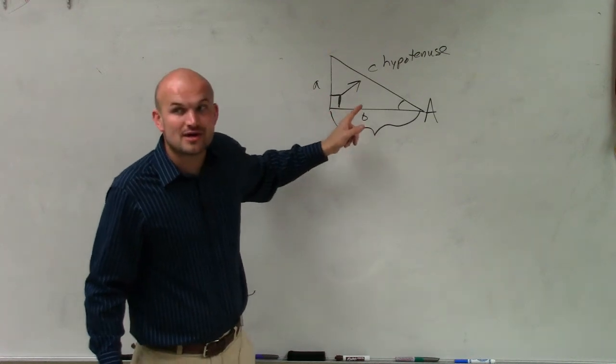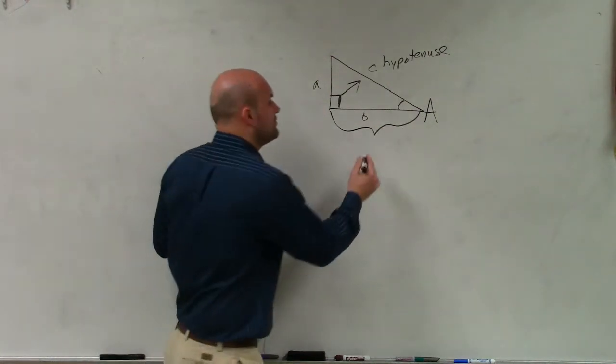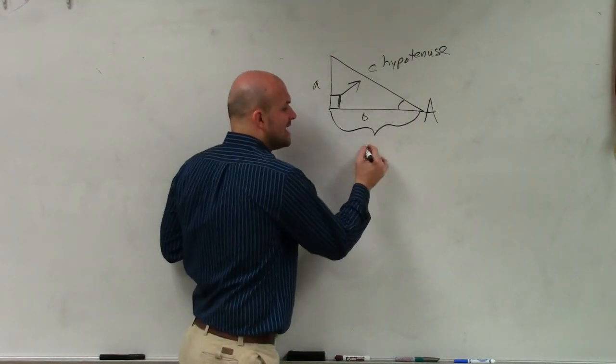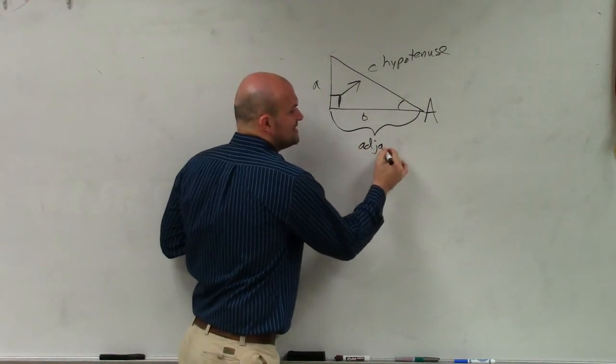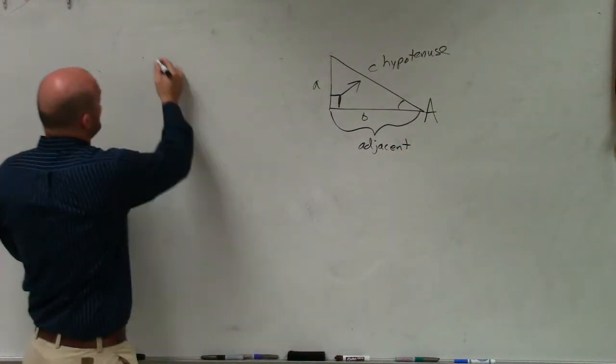But this one connects the angle and the right angle. So this side length, even though it is a leg, is what we call the adjacent leg. And it's really important.